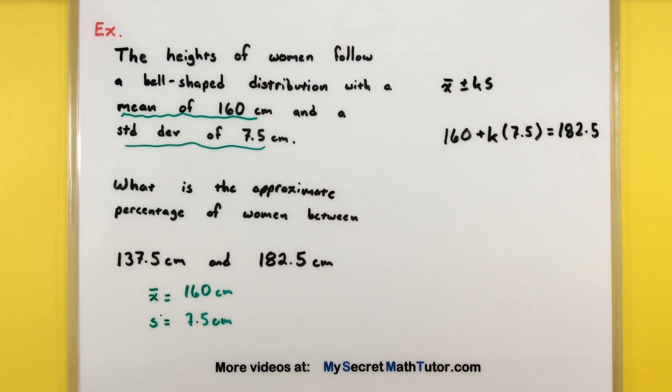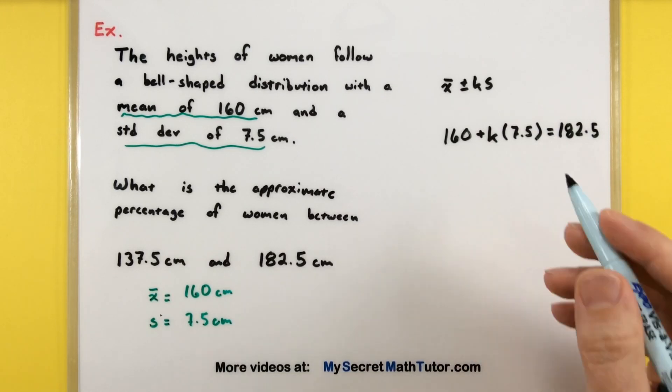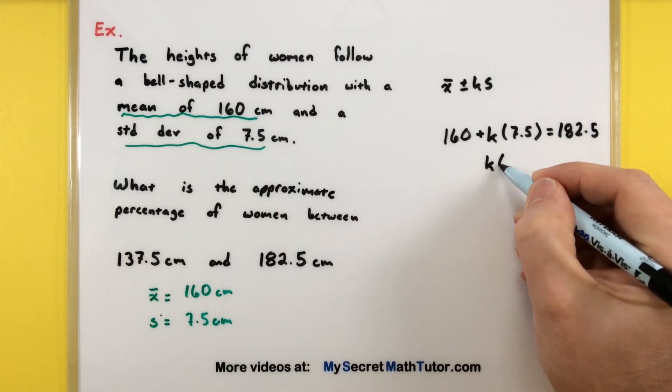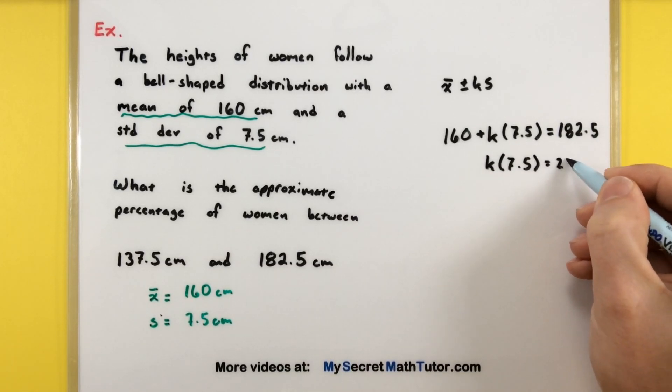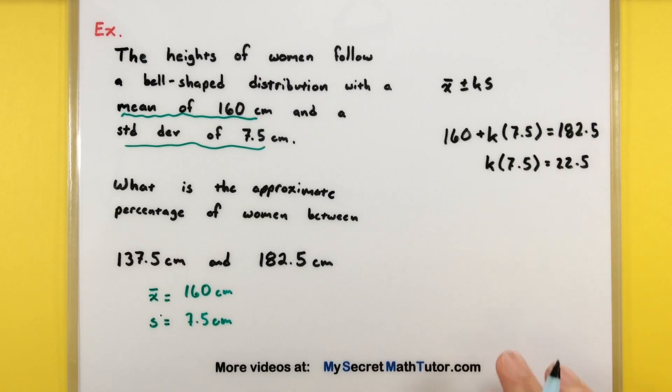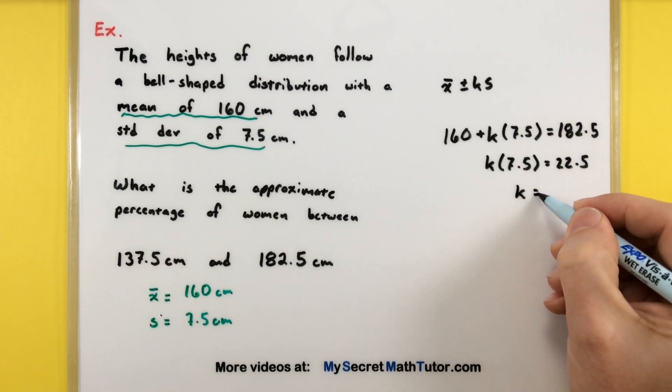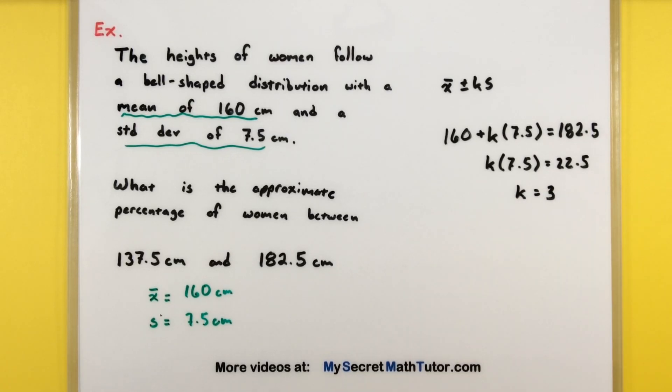Now we just need to solve this for k and see how many standard deviations that is. We'll start by subtracting 160 from both sides. That'll give us 22.5, and then we can divide both sides by 7.5. That will give us that k is equal to 3. Perfect. So there's three standard deviations to reach that upper range.